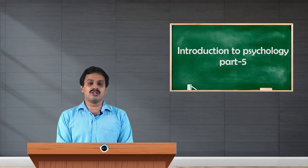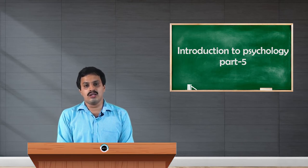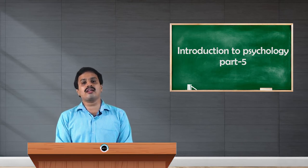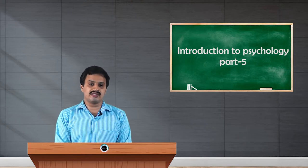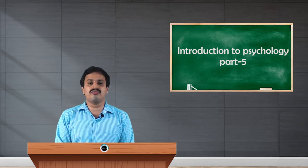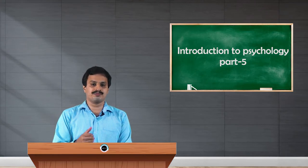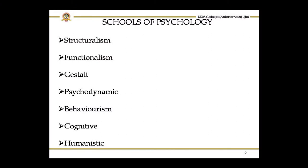Abraham Maslow's important concept in his theory of needs is self-actualization. He explains about a pyramid or hierarchy of needs, and at the top level there is the self-actualization need. One has to start from the basic needs and reach the final need, that is the self-actualization need.